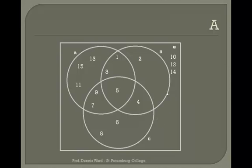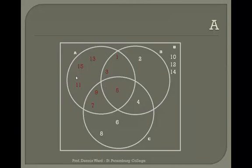Now with the same setup, if we're asked what is set A, set A is going to be all the numbers inside the circle for A, regardless of the subgroups. Everything in there is in A — so that's eight numbers total.